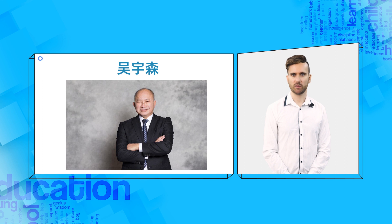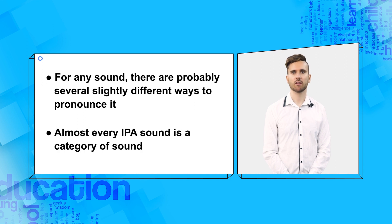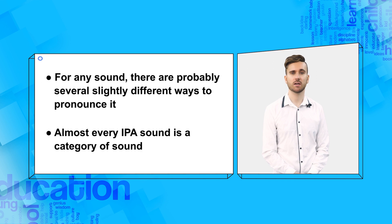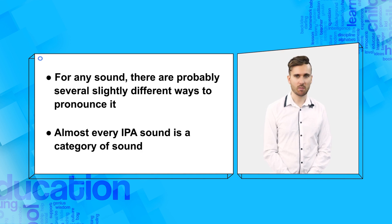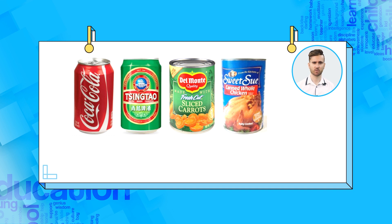This is one area of study within phonology. The definition I just mentioned is a very abstract concept, so let's begin with something more concrete. The most basic concept in phonology is that, for any sound, there are probably several slightly different ways to pronounce it. This means that almost every IPA sound discussed in the previous unit is a category of sound. The members of each IPA sound category are the different ways to pronounce each sound. As an analogy, let's look at a non-phonological example: cans. There are different types of cans, but they are all members of the category 'can'.